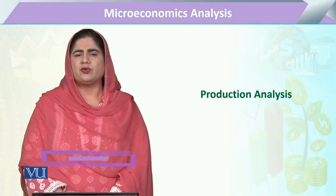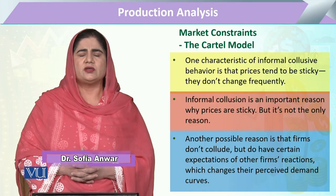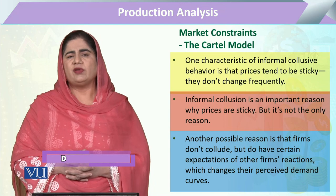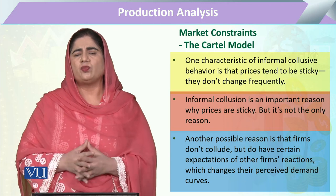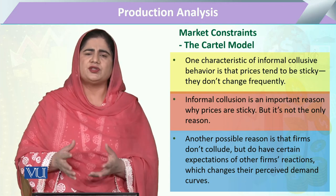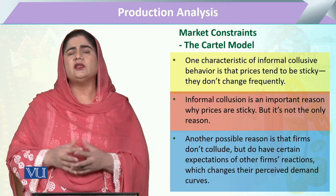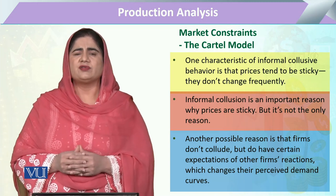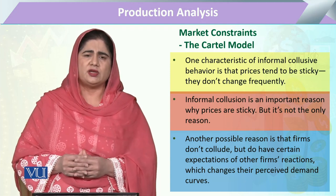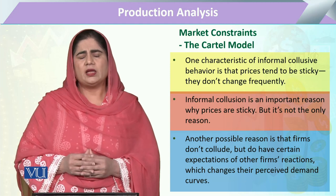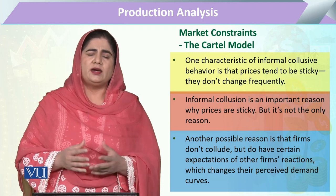Module 164 in production analysis, under the topic of market constraint, the cartel model. Now we are discussing the informal collusion of the firm. As we have studied, when there is a small group of firms, they have a formation called the cartel. That cartel may be under a certain agreement, but there is another form where some firms cannot have a formal agreement or written setup — this is informal collusion.